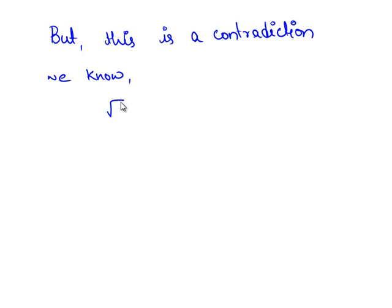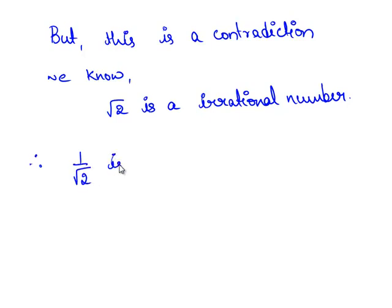But this is a contradiction because we know that root 2 is an irrational number. The obtained contradiction is due to our wrong assumption that 1 by root 2 is a rational number. Therefore, 1 by root 2 is an irrational number.